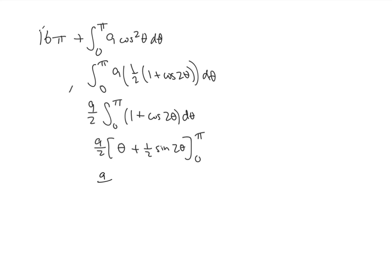So that gives us nine-halves times π plus one-half sine of 2π minus 0 plus one-half times the sine of 2 times 0.